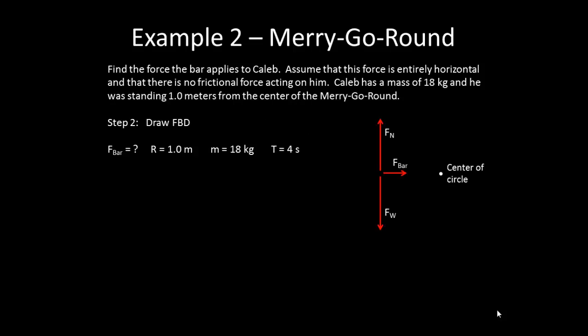Step 2 is to draw a free body diagram. So we have the force of the bar pointing towards the center of the circle, normal force up, weight down. Again, we can think of this as a side diagram. Now, we want to write our net force equations. I'm going to write one both for the x direction and the y direction, even though for this particular problem, we won't use the net force in the y direction. For the x direction, the net force is a centripetal force, and it's the force of the bar. In the y direction, the sum of the forces is equal to 0, and it's F_n minus F_w.